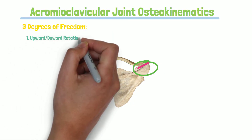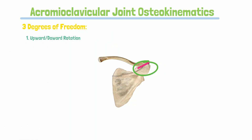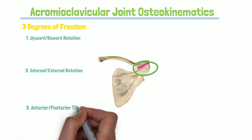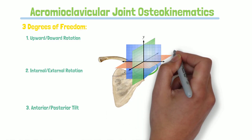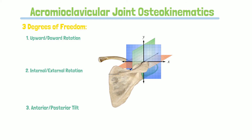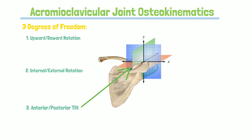It is important to note that the three degrees of freedom correspond to the three cardinal planes. For the ease of reference, here is a coordinate system passing right through the acromioclavicular joint. Upward and downward rotation occurs through the frontal plane, internal-external rotation occurs in the horizontal plane, and anterior-posterior tilting occurs in the sagittal plane.